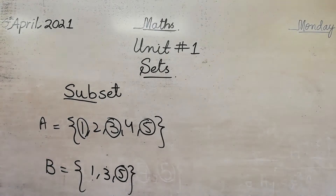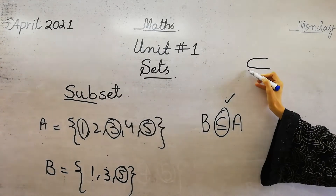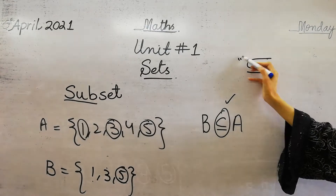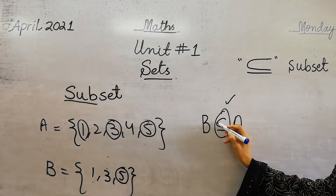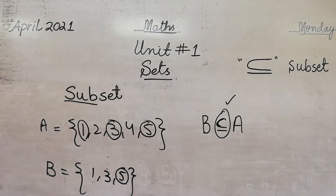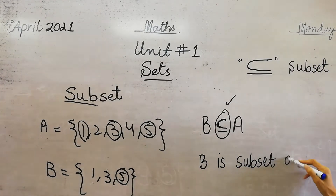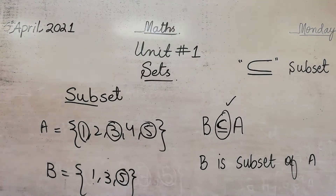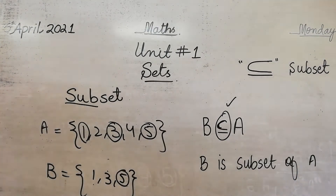So B is a subset of A. This is the notation of subset — this is the symbol of subset. Set B is a subset of set A. B and A are sets.